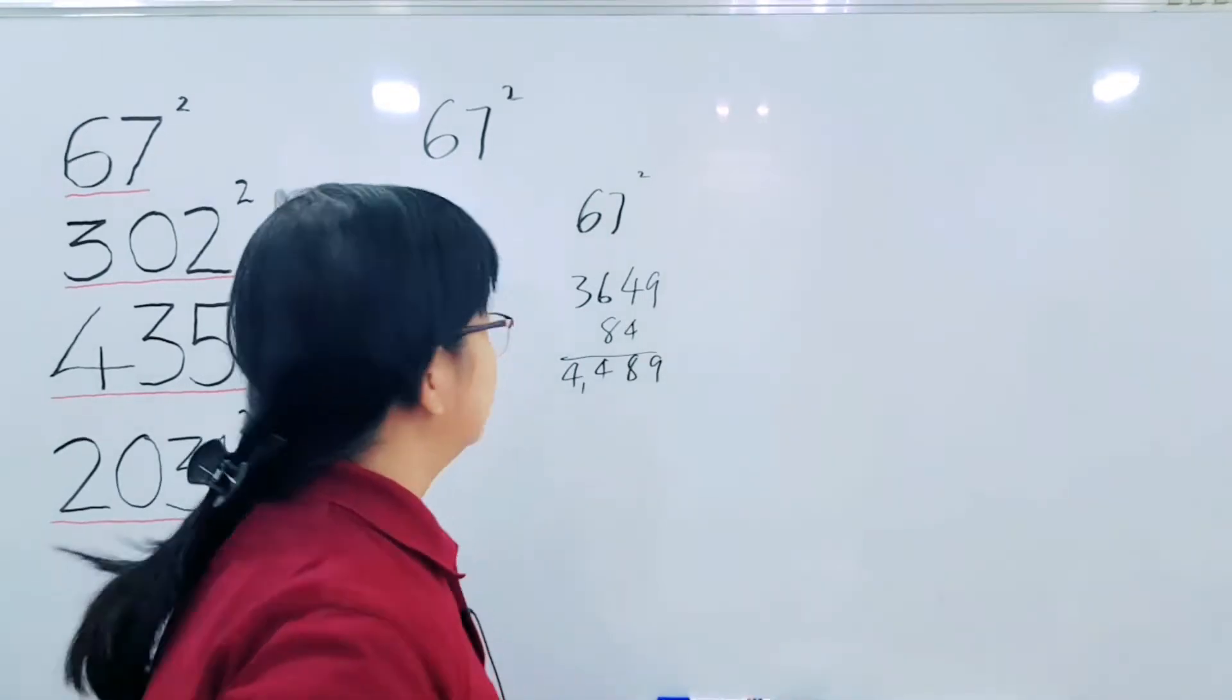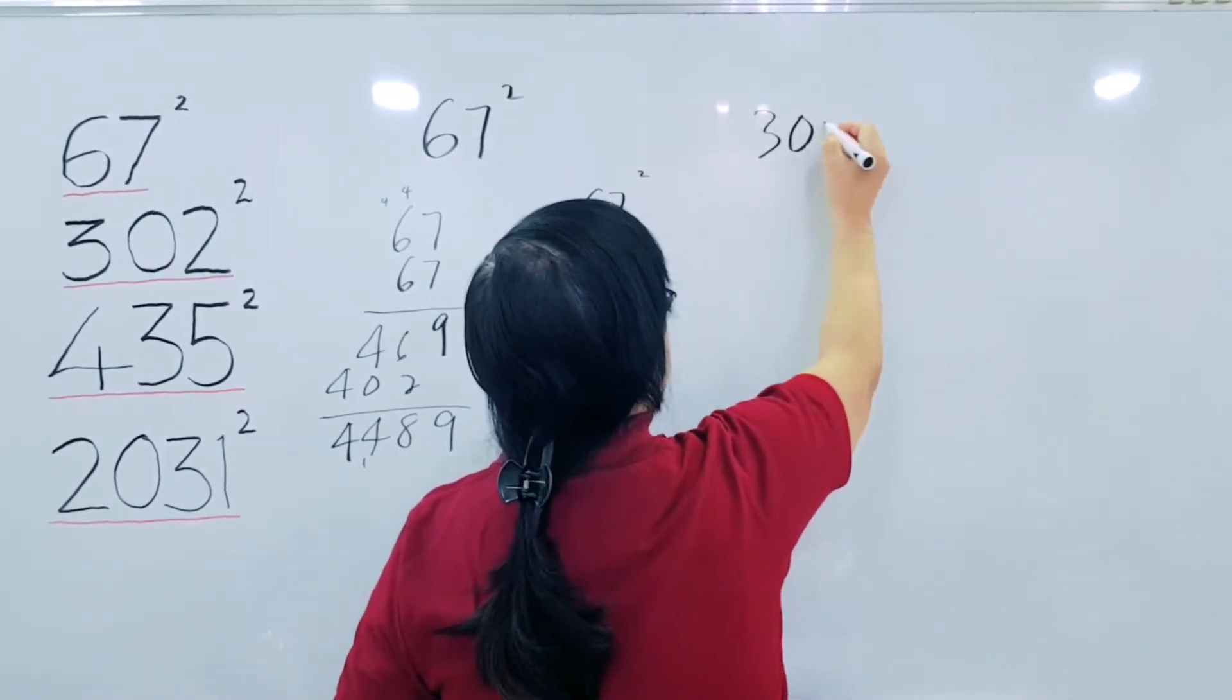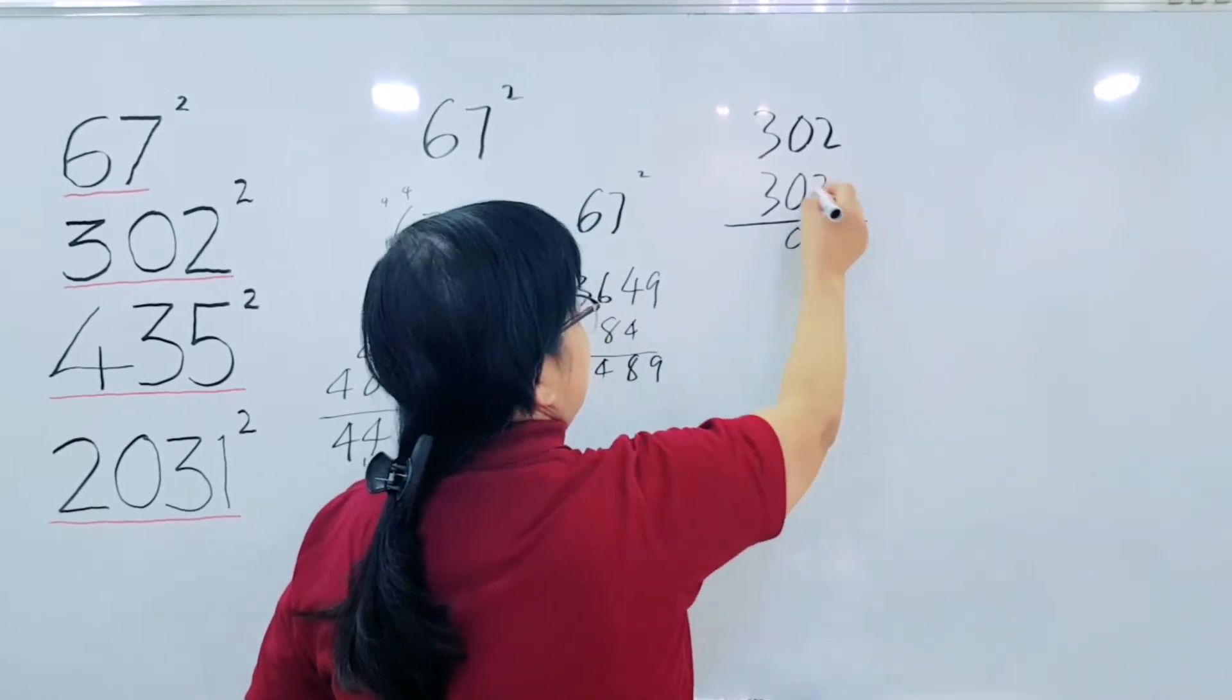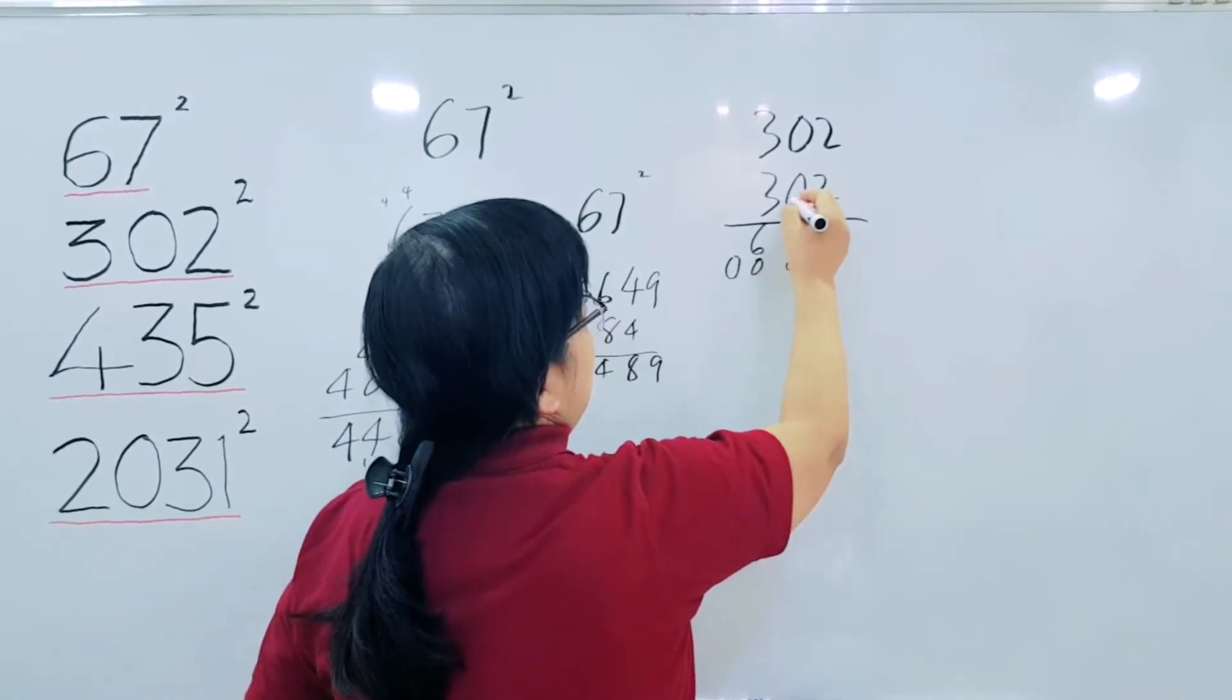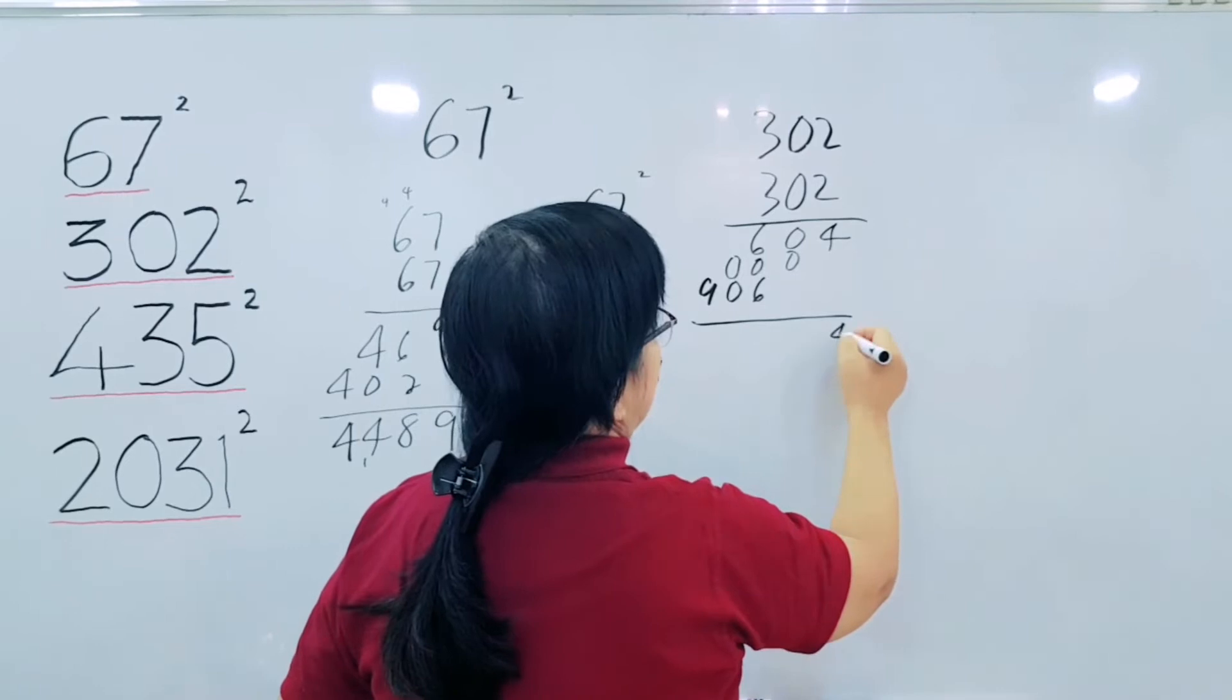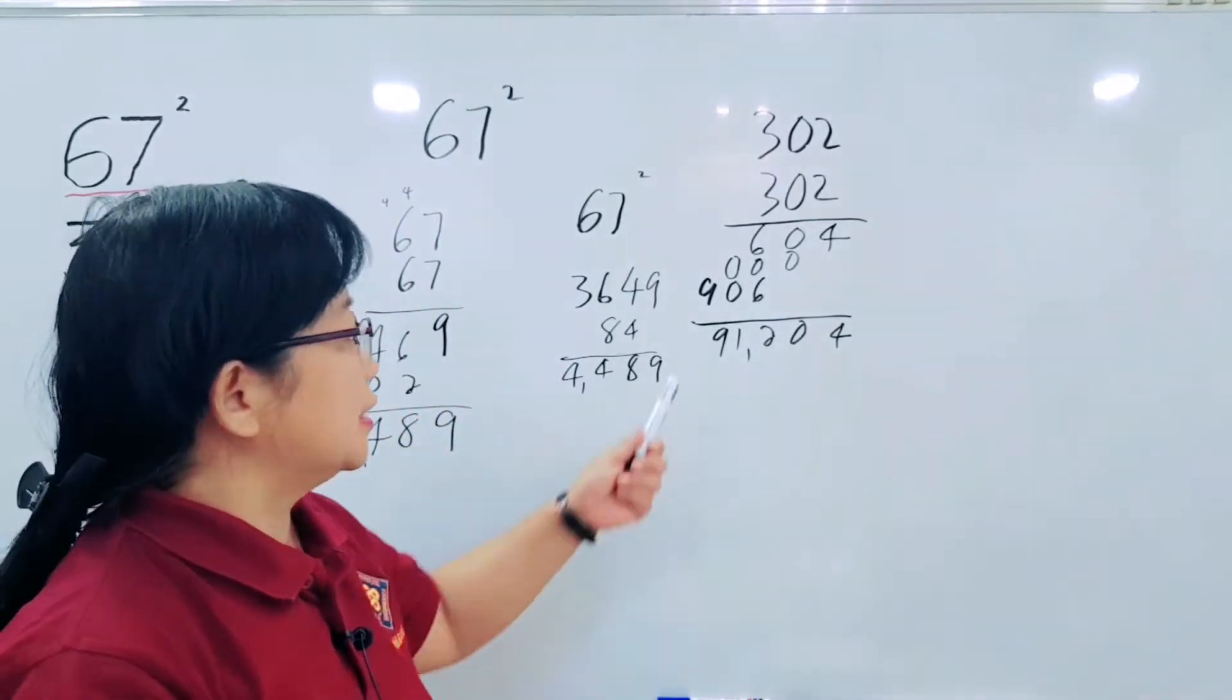Our sample number 2: 302 squared. Then, 3 times 2 is 6. 3 times 0. 3 times 3 is 9. Therefore, 4, 0, 12, 1, 91, 204. This is the usual way.